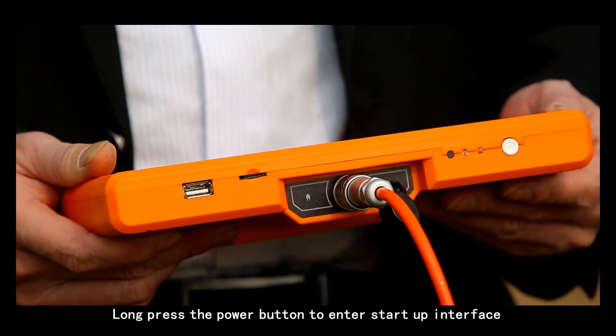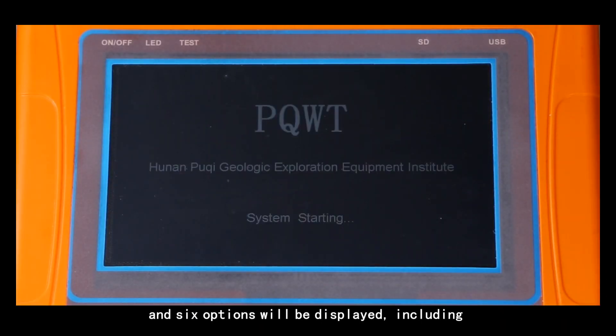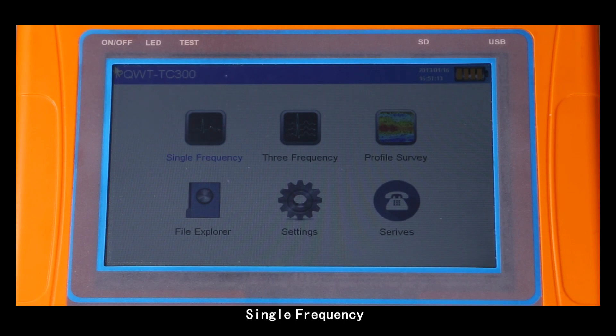Long press the power button to enter startup interface and 6 options will be displayed, including single frequency, 3 frequency, profile survey, file explorer, settings, and surface.